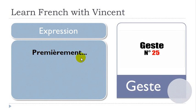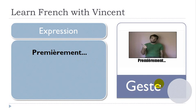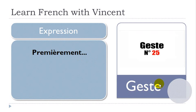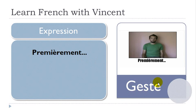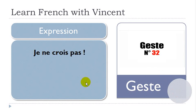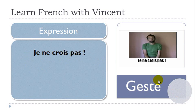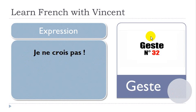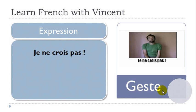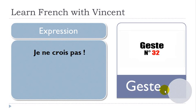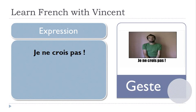Premièrement can be translated as 'first.' So you want to introduce probably several things and you start with the first one — premièrement — your hand signals the first one. Next: 'Je ne crois pas' — I don't think so. It's only in the head; you're looking at the sky or ceiling. When you do that, you give the information that you don't think so. Je ne crois pas.